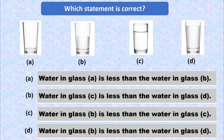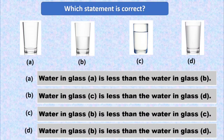Let's check the options. Option A says water in glass A is less than the water in glass B — this option is correct, but we must check the other options also. At option B, water in glass C is more than the water in glass D, but we can see the water in glass C is actually less than the water in glass D, so this option is incorrect. Moving to option C, water in glass B is more than the water in glass C, but actually the water in glass C is more than water in glass B, so this option is also incorrect.